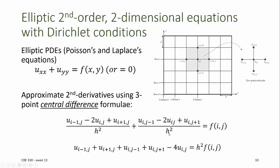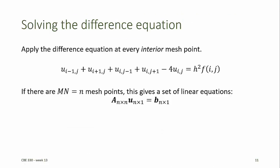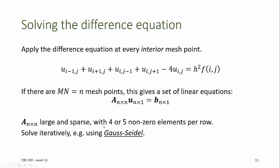Because these both have h-squared in the denominator, we can multiply this entire equation by h-squared. Since we apply this equation at each of the interior mesh points, if our mesh is m by n — m points in the x-direction and n points in the y-direction — then m times n equals little n, the number of mesh points. This gives us a set of n linear equations in n unknowns. The coefficient matrix A will be an n by n matrix that is large and sparse.